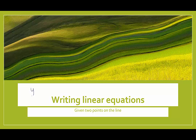Slope-intercept form is y equals mx plus b. To write an equation in slope-intercept form we need to know the slope and figure out the y-intercept. I usually use the intermediary step of point-slope form — y minus y₁ equals m times (x minus x₁) — then distribute m and add y₁ to both sides, rather than going back into y equals mx plus b. I find there are fewer mistakes that way.